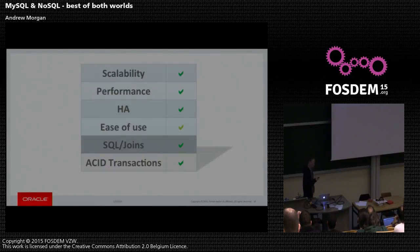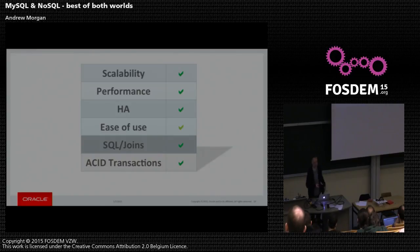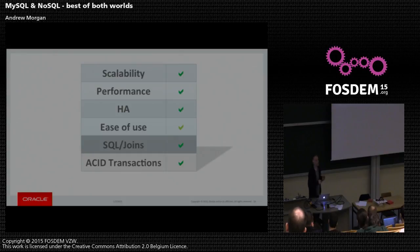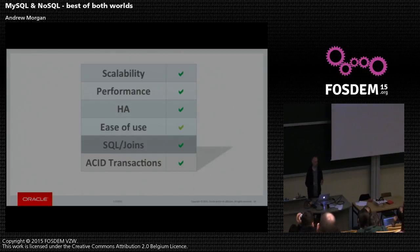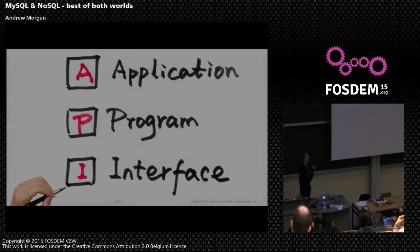At this point, I think we're scoring pretty well against what you need from NoSQL databases: scalable, highly performant, highly available, fairly easy to use — especially with the auto installer. And then the bonus of still being able to do joins that span across all of the data nodes, querying your entire data set. You can have ACID transactions that cross over data nodes — so it doesn't matter how you partition the data, all of your transactions are safe.